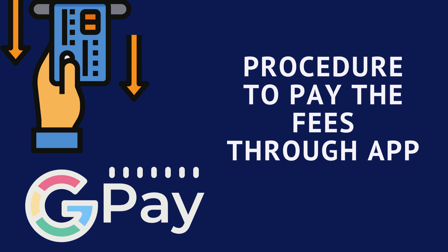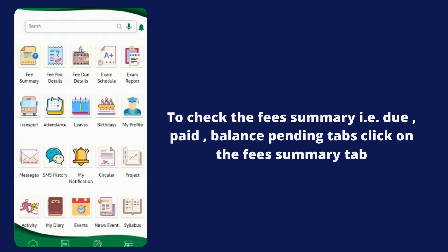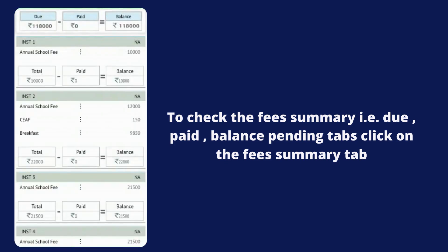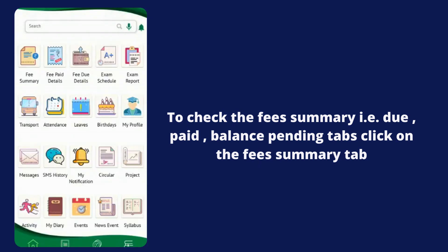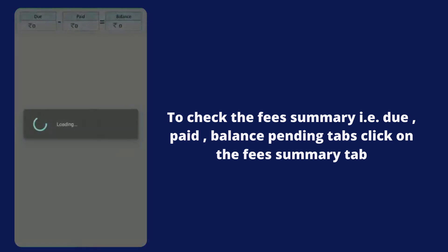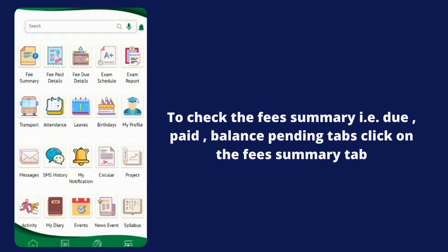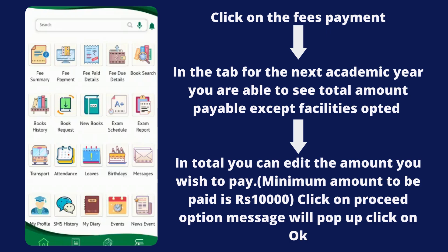Now we move to the procedure to pay fees through the school app. Go to the Fee Summary tab. When you click on Fee Summary, you will be able to see the fees that are due, how much has been paid, and what is remaining — that is the balance amount for all the installments.